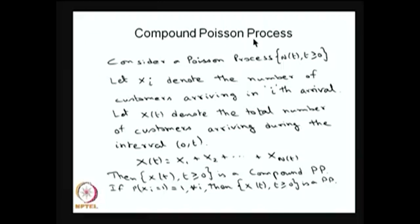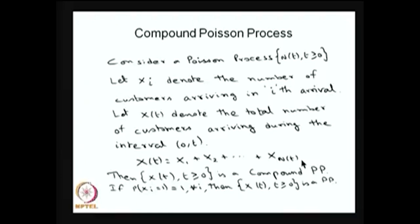One can deduce the standard Poisson process from a compound Poisson process by substituting that each x_i takes a value of only one unit — meaning the number of customers arriving at the i-th time point is always one. If the probability that x_i equals one is 1 for all i, then only one value is possible at each arrival event, and the result is a standard Poisson process.